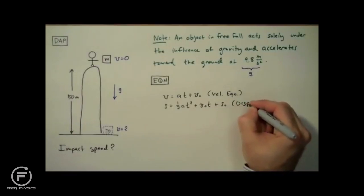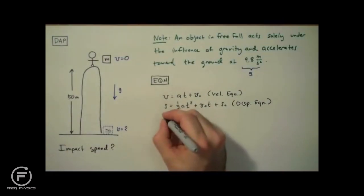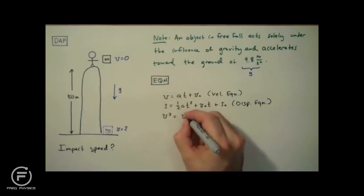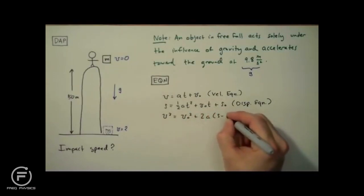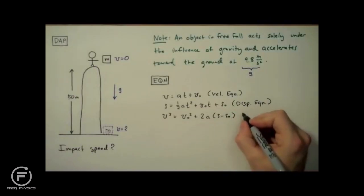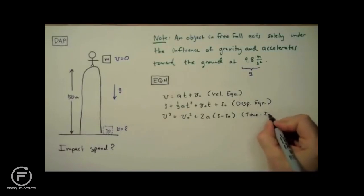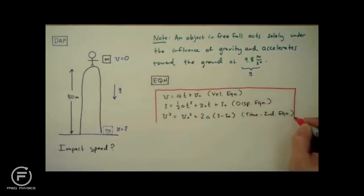And if we combine these two equations, we can get a third equation without t as a variable. And we call that the time independent equation. These equations are so important to beginning physics students that you should memorize them. Or at least have them written down somewhere where you can access them. Because you can analyze any situation that involves constant acceleration with just these three tools. So I'm going to box these equations up in red. Which in my notes always means very important equations!